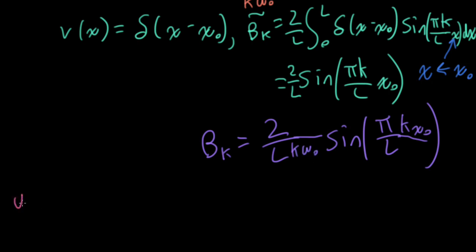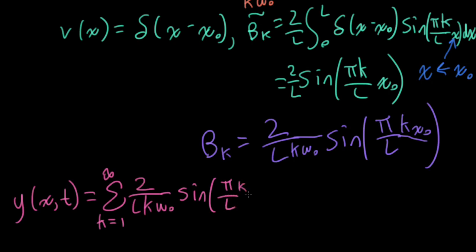And now if I were to go back and write that into our original solution to the 1D wave equation, we have a sum over all of the harmonics. And my beta k, I've got 2 over l k omega naught. And then I have a sine pi over l k x naught. And then I'll have a sine pi k over l x. So this is from the original expression for the 1D wave equation solution. And this is from my beta k.